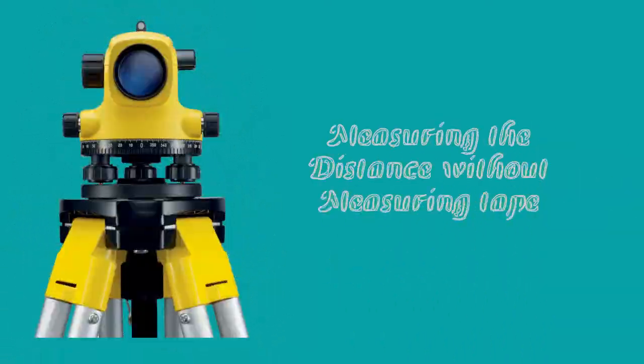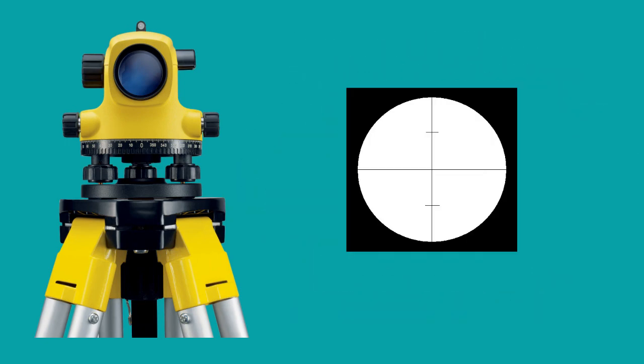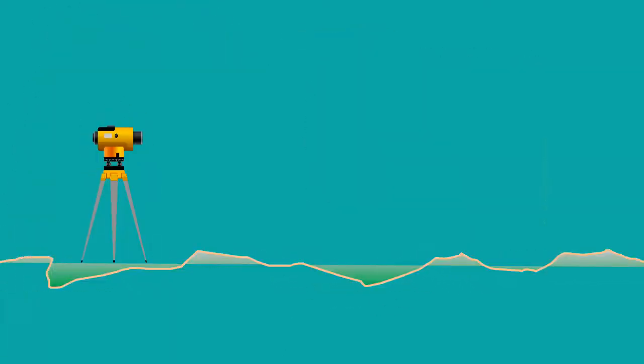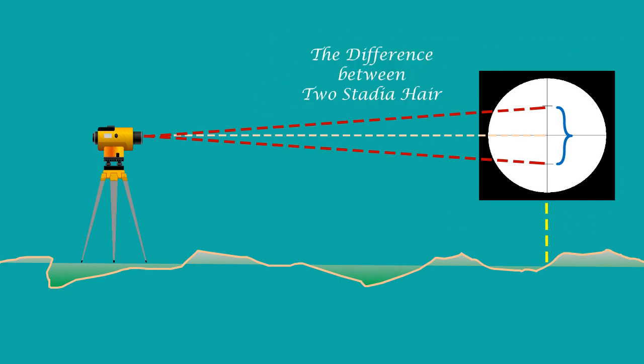Let us see how to measure the distance with leveling instrument without measuring tape. Before taking the measurements, we must know more about cross hairs in the telescope. In addition to the cross hairs, there are two more lines. That is called stadia hair. Upper one is known as upper stadia and lower one is known as lower stadia. Now set up the leveling instrument and fix the leveling staff where you want to measure the distance. Take the reading at upper stadia and then reading at lower stadia. The difference between these two stadia hair is the actual distance in meters between the instrument and staff.